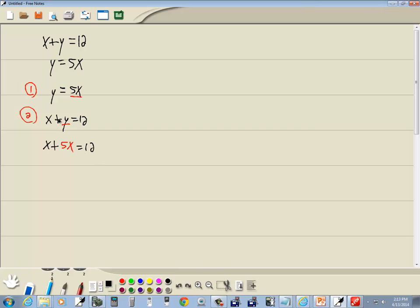After substitution, we don't have y anymore, so we can solve. x plus 5x is 6x equals 12. Divide both sides by 6, and we get x equals 2.